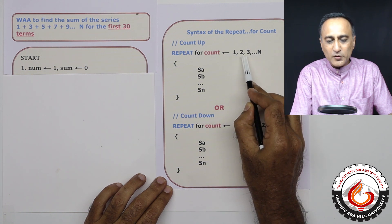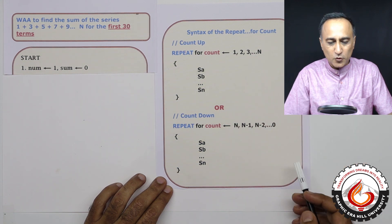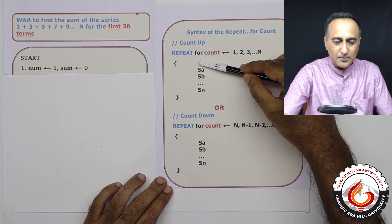You can also increase by two, you can increase by three and so on. It's up to you. This is the count up loop.